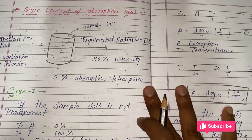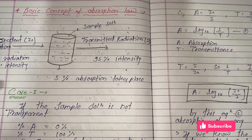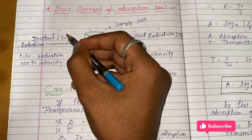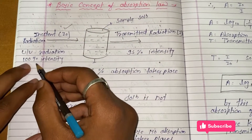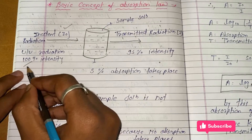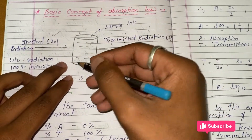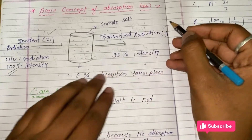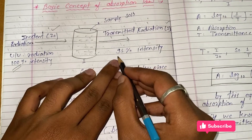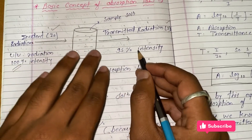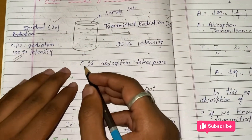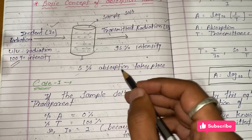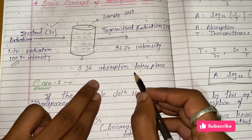Let's see an example of Lambert's and Beer's Law using an absorption diagram. In this diagram, the incident radiation is represented as I₀, entering with 100% intensity. The UV radiation passes through a sample solution. The transmitted radiation, indicated as I, comes out at 95% intensity, because 5% of the radiation is absorbed by the sample — so 5% absorption takes place in the sample.